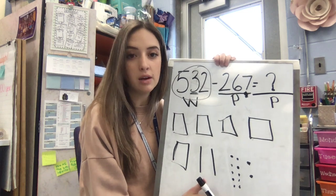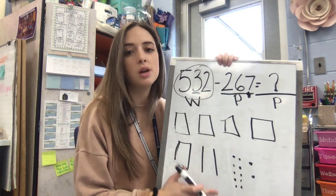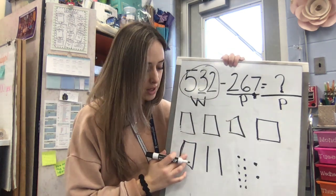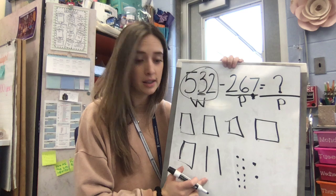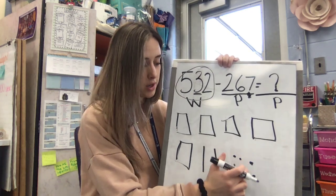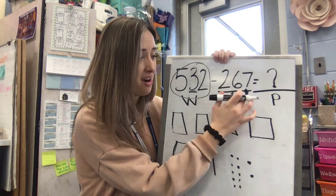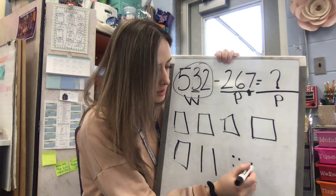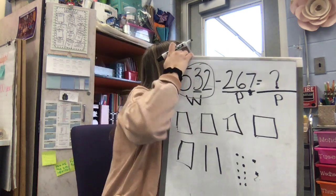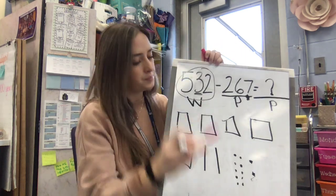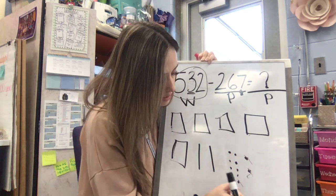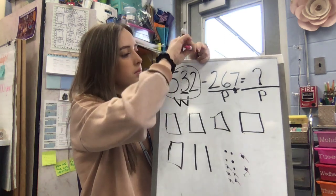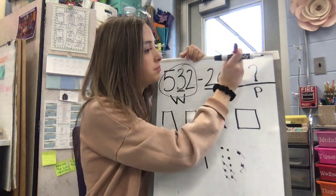The important part here is that I still have 532. It's just shown a different way, right? 100, 200, 300, 400, 500, 510, 520, 530, and then 1, 2. Now can I take away 7 ones? I can because I broke that 10 apart. So 1, 2, 3, 4, 5, 6, 7. So my ones are done. Put a little check.